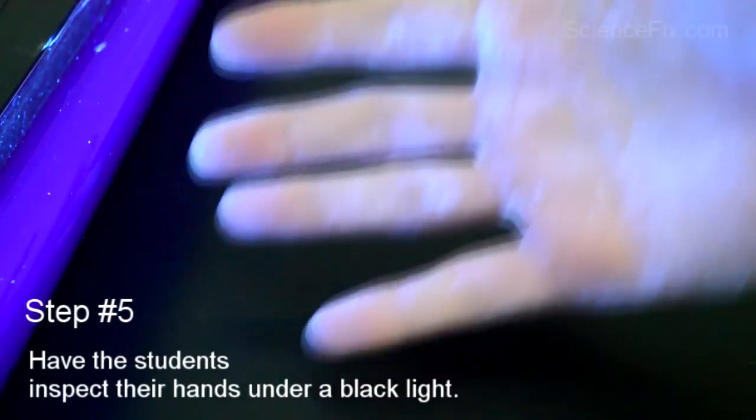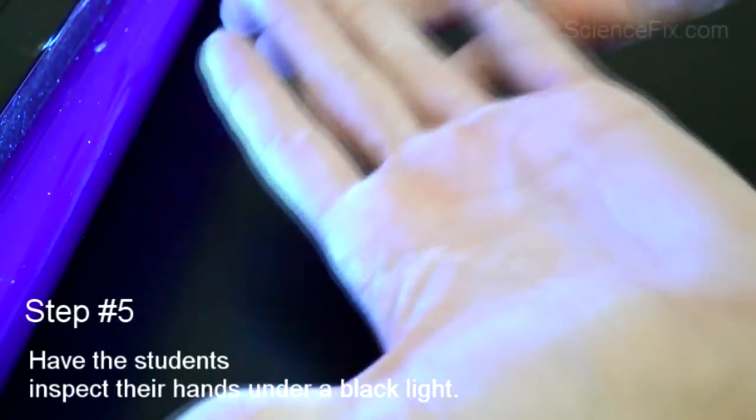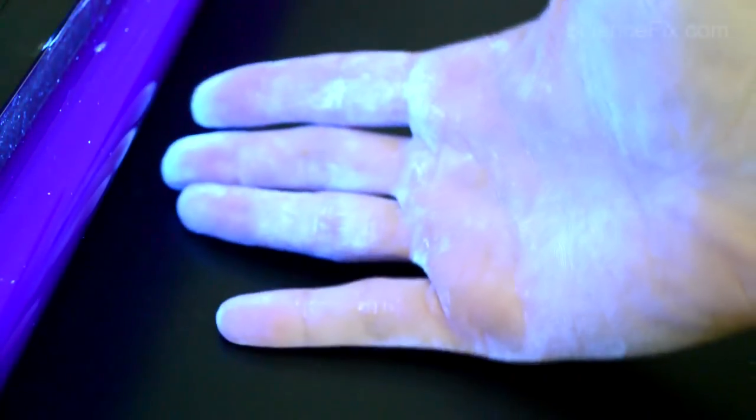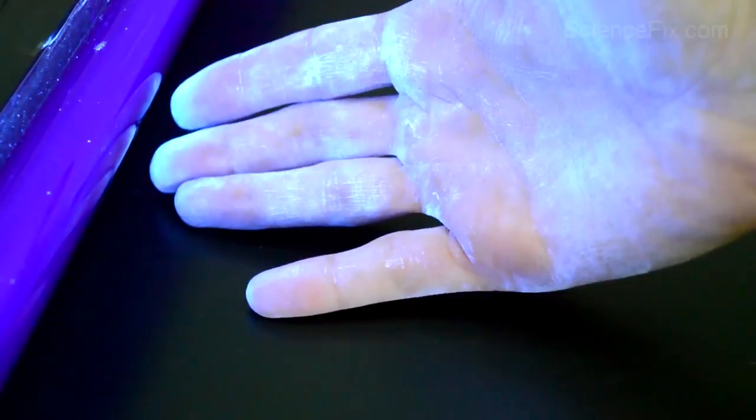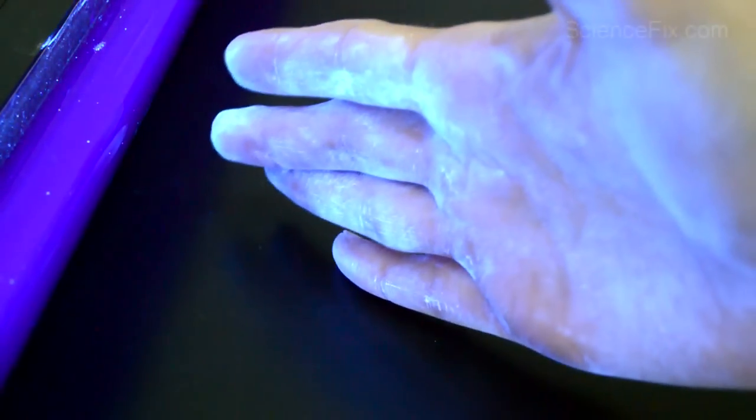Now I didn't tell them what was on the bee or the stuffed animal until afterwards. I tell them, oh, there's some germs that were on there, and let's go inspect our hands. So I have them lined up, and they inspect their hands underneath the black light. And you can see, there's my hand, so you can see what it looks like when powder's on them.